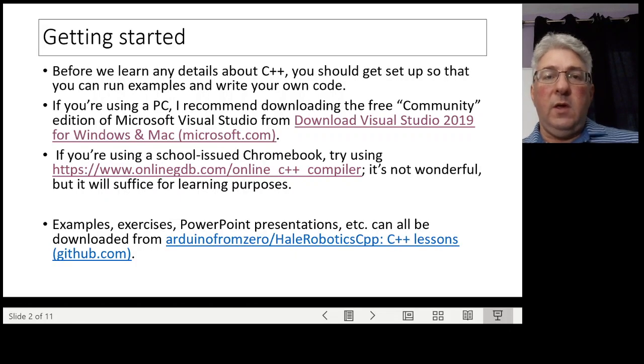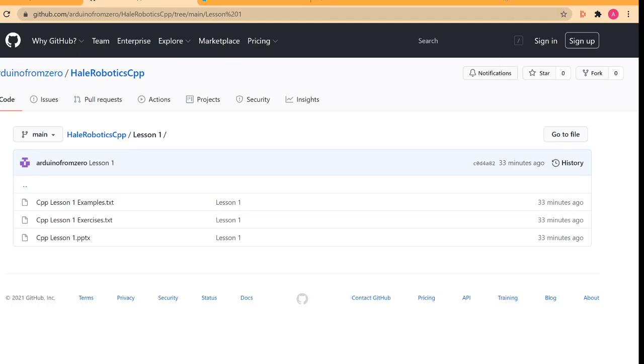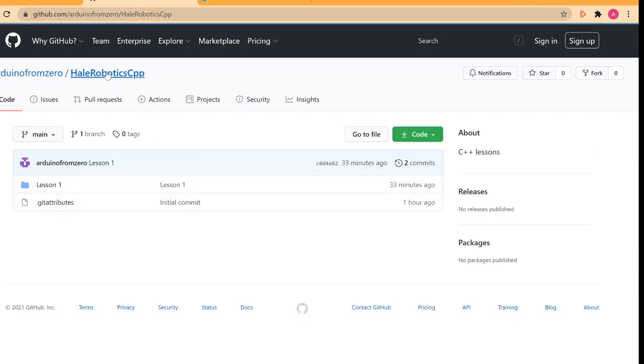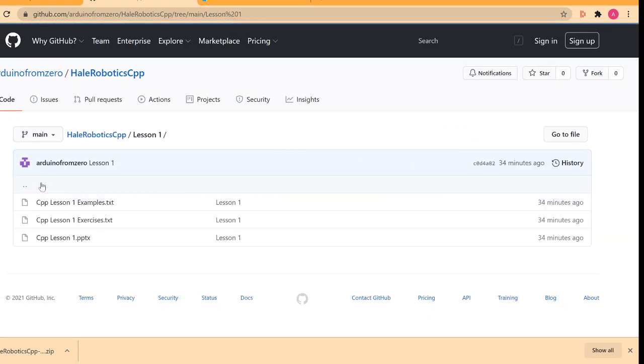So that will be how you can run the examples. And all of these things, again, are available on GitHub at arduinofrom0 slash failroboticscpp. You'll be able to go to this code button to download a zip file, which will pop one open and you can open it up to get the files. You've got the PowerPoint that I'm going through now. There'll be a file with the examples that we'll see in the PowerPoint, so you can just cut and paste and try them out. And then the exercises will be the ones that you can do on your own.